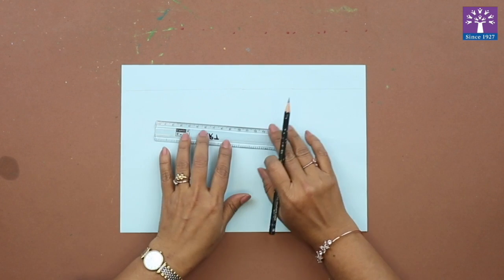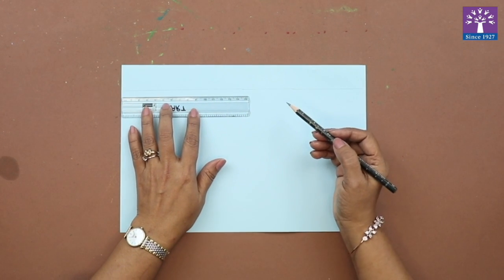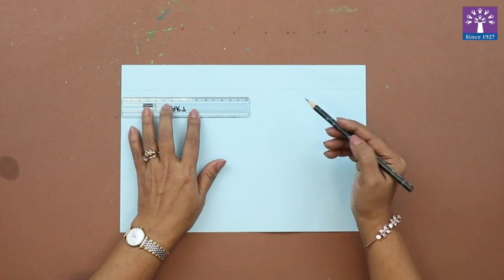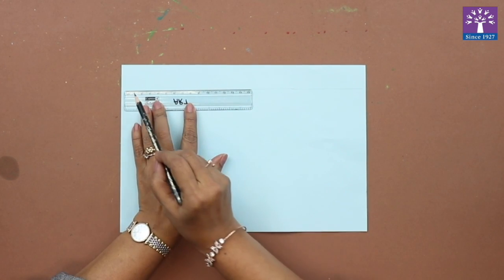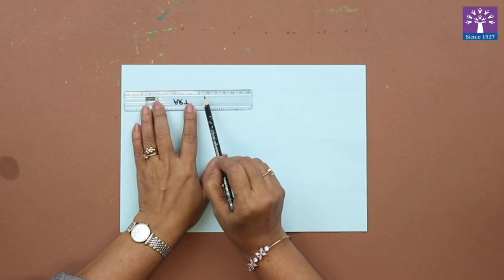Okay, now I drew a straight line. The line with the pencil is very light, I have not pressed it hard. Now with the help of a scale, can you see that on one side of the scale there are numbers written one, two, three, four, five.